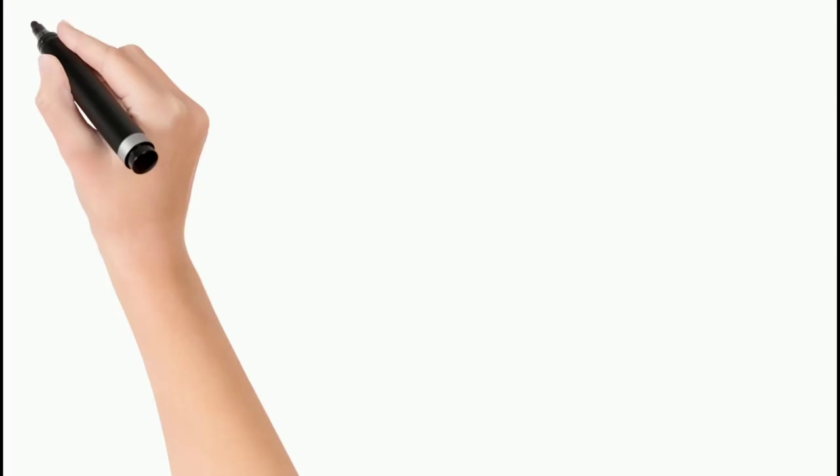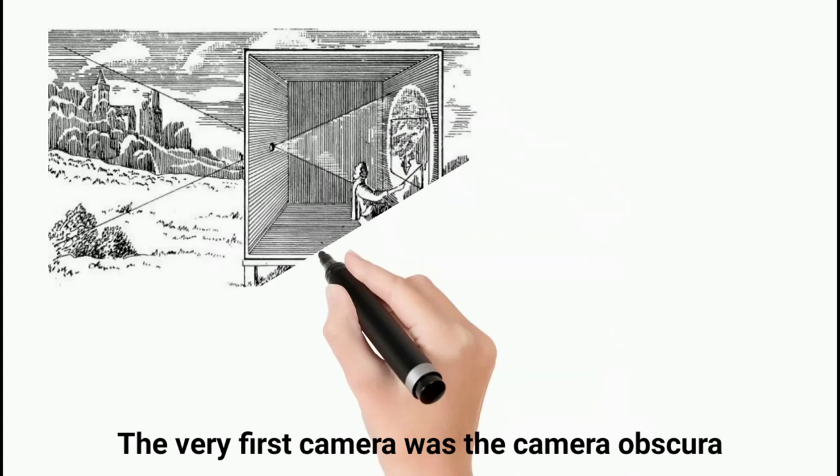The very first camera was the camera obscura, which was invented by Muslim scientist Hassan Ibn al-Haytham. It is simply a phenomenon in which a darkened space with a tiny hole on one side will have the outside world projected into this space opposite the hole.